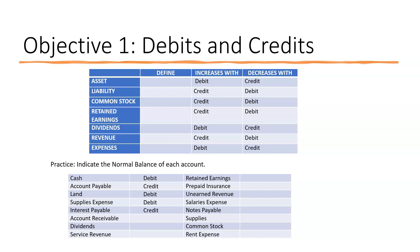Accounts receivable — that's customers that owe you money — it's an asset, so it has a debit normal balance. Dividends return earnings back to stockholders and decrease stockholders' equity; it increases with a debit, normal balance is debit. Service revenue — anytime you see 'revenue' in the account title it's almost always a revenue account — you record it with a credit, normal balance is credit. Retained earnings is a stockholders' equity account; normal balance is credit.